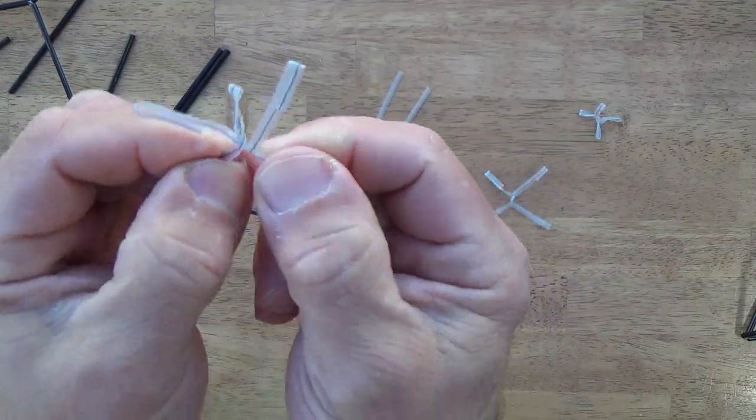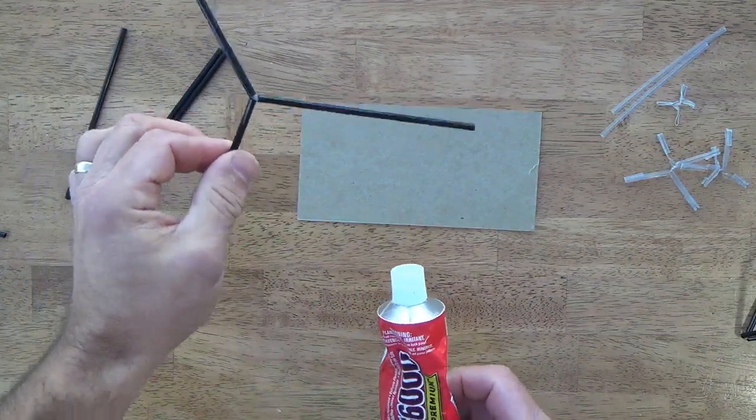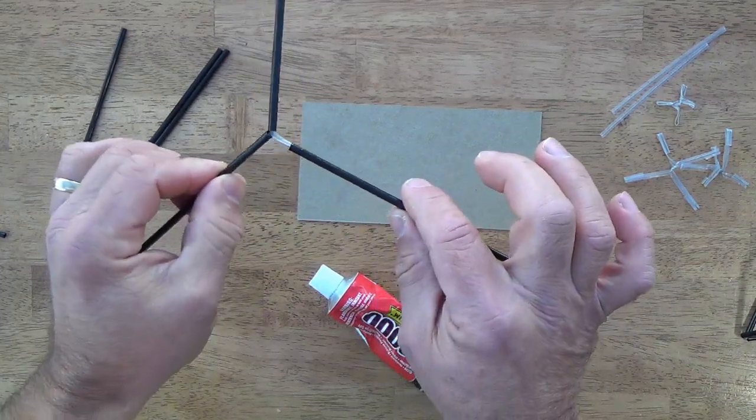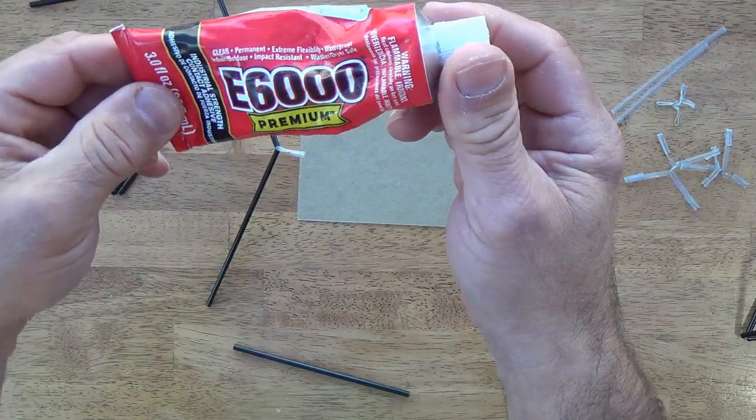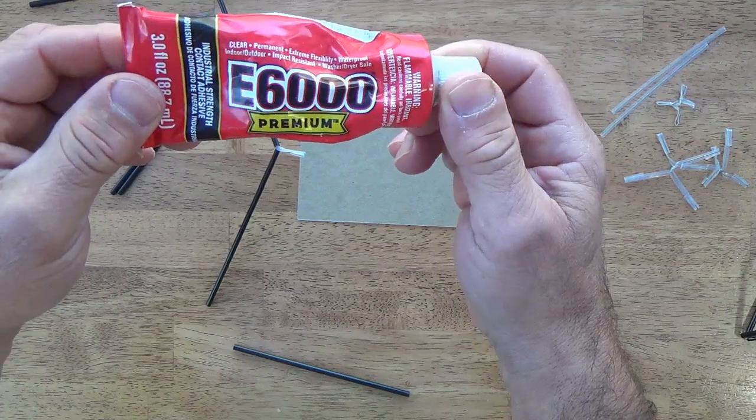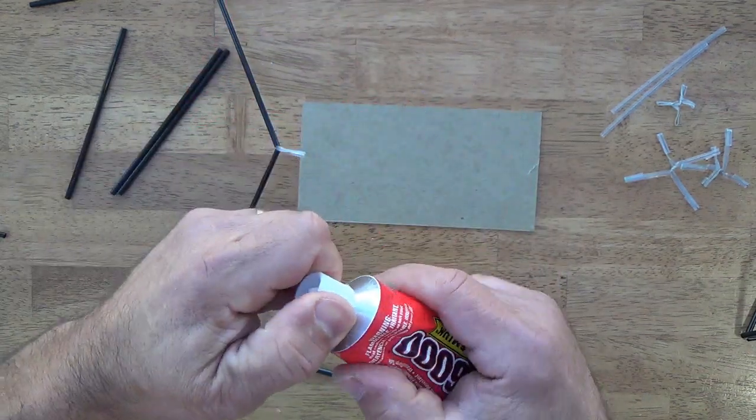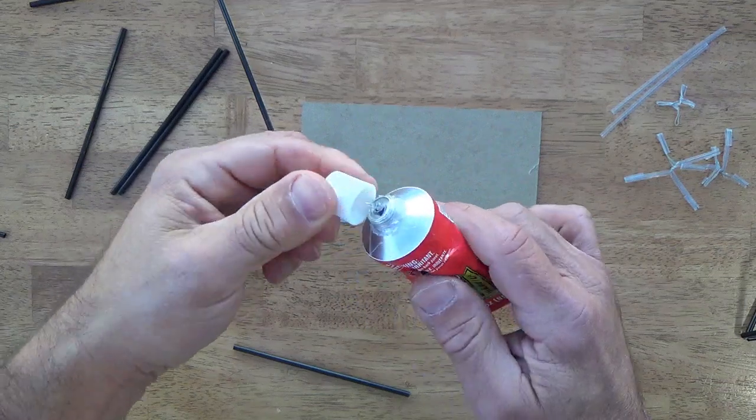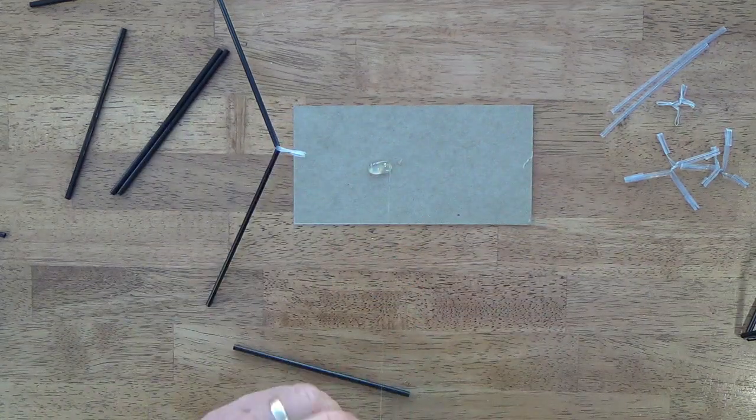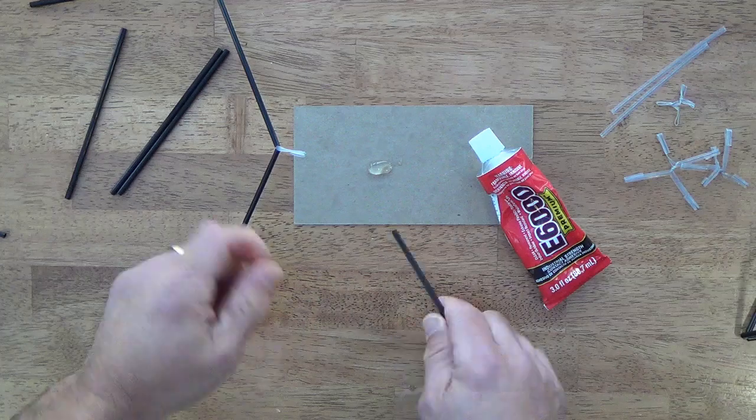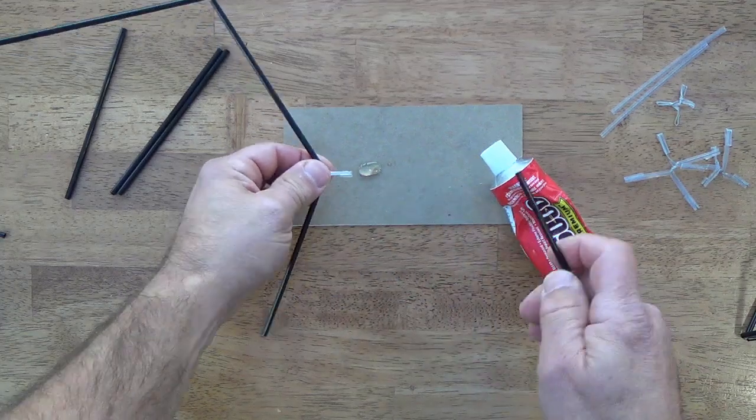If you want to glue these to make them more permanent, you can simply take some of this—this is some E6000 premium glue, industrial strength contact adhesive—and this is especially good for plastic to plastic. It dries out pretty quickly, so I'd recommend just putting a dab on a piece of cardboard, not much but the size of a pea. You're going to do that over and over again because if you try to work with it for five minutes, after about three minutes or just two minutes it's dried up.